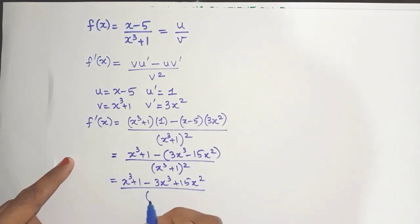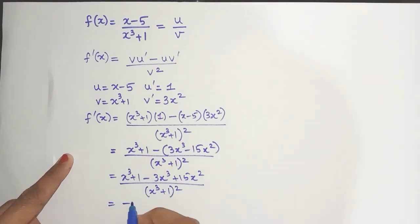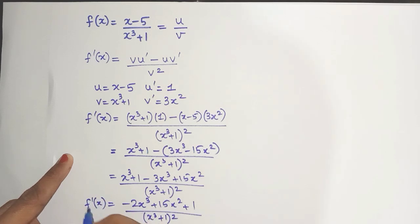Did you see that there is x cube x cube? These are like terms. So what I can definitely do is subtract them. So I'll get minus 2x cube plus 15x square plus 1 divided by yes this is the denominator. Nothing further can be done. So this is the derivative.